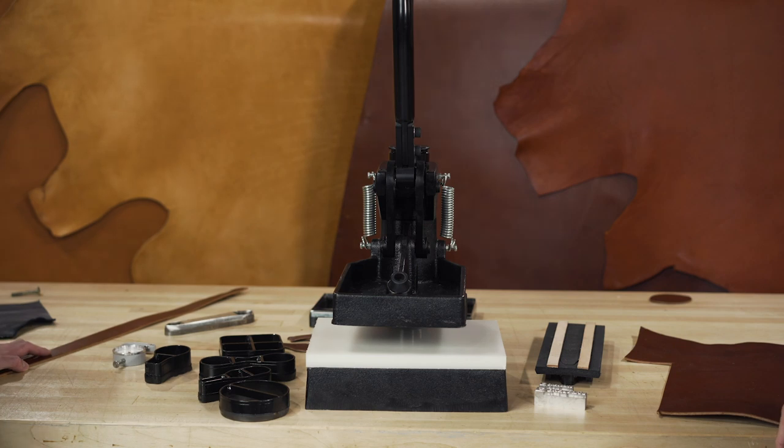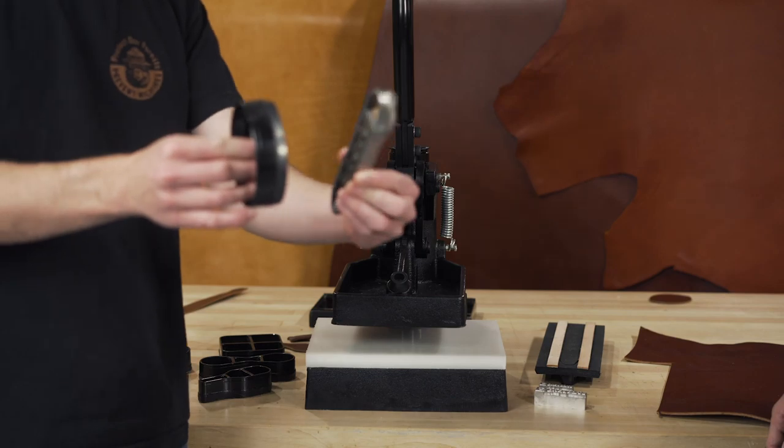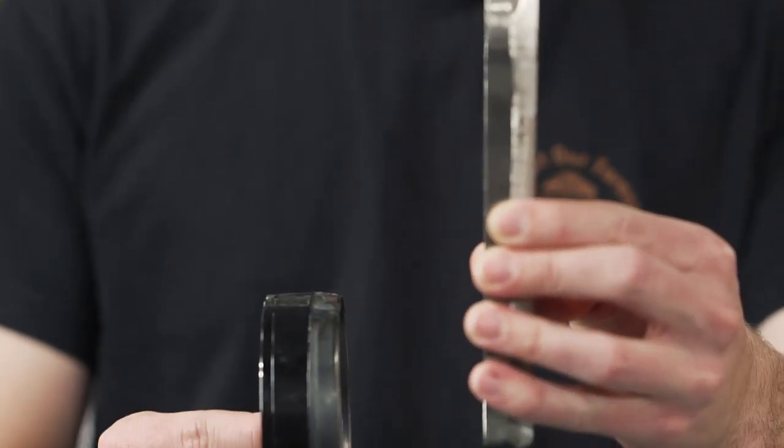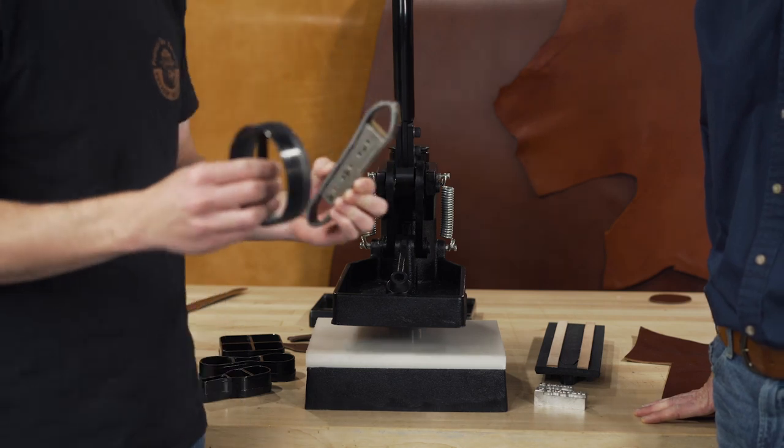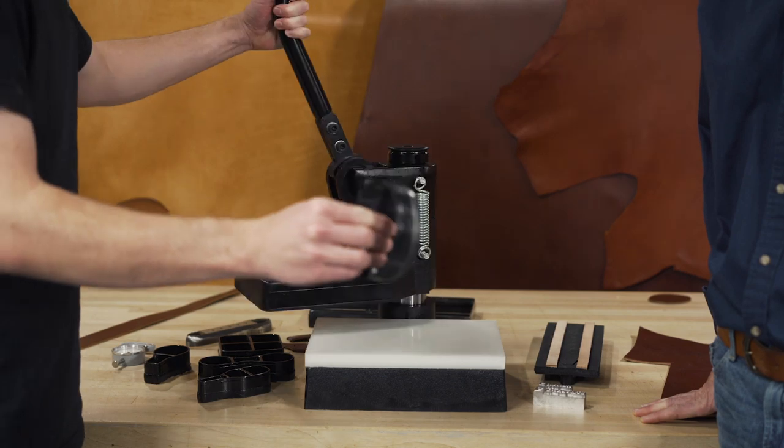All right guys, let's do this. We're going to start with figuring out what die we're using. Buckle Guy stocks the inch and a quarter. But as Hugh said, there's going to be different die thicknesses. So the first thing we have to do is set up the clicker to that specific thickness. We'll be using this inch and a quarter.